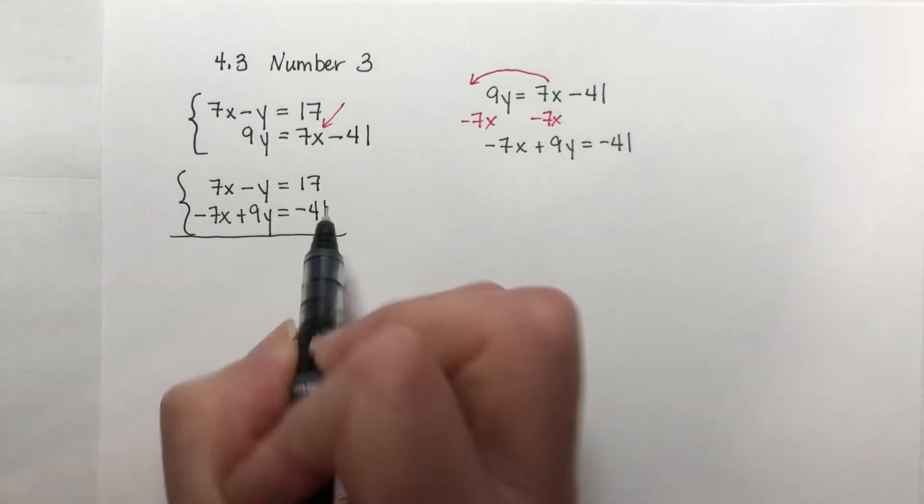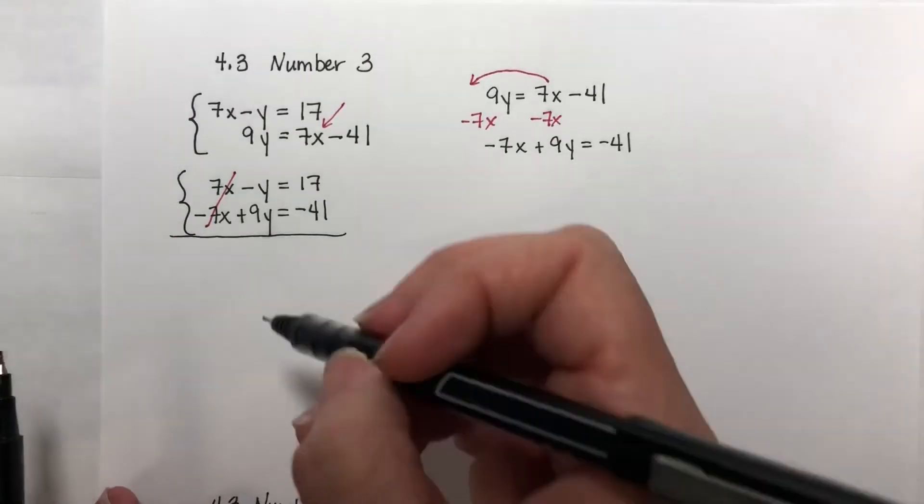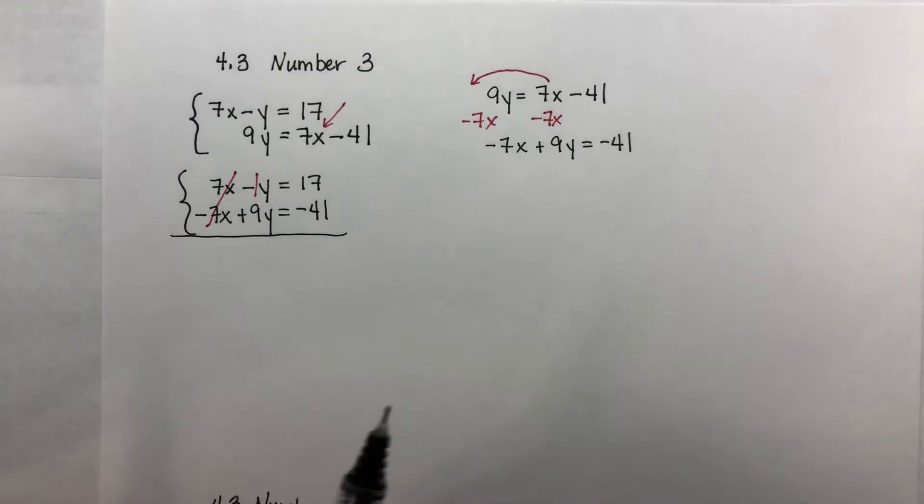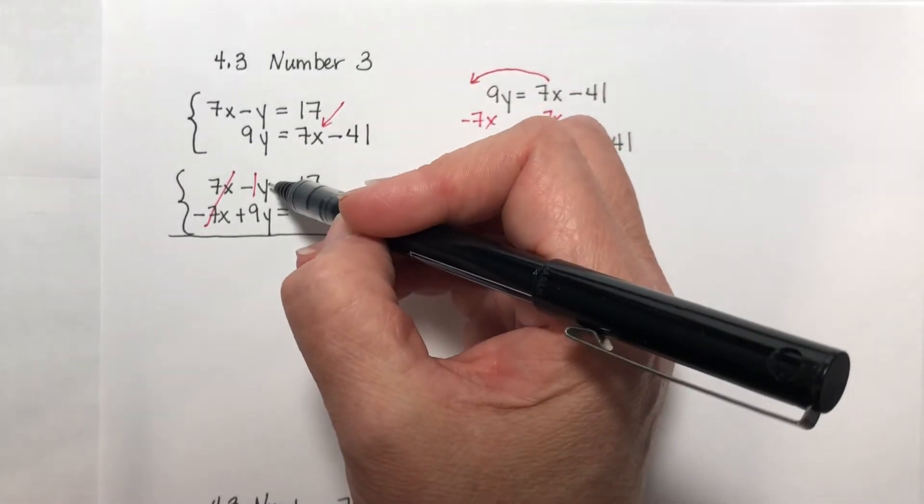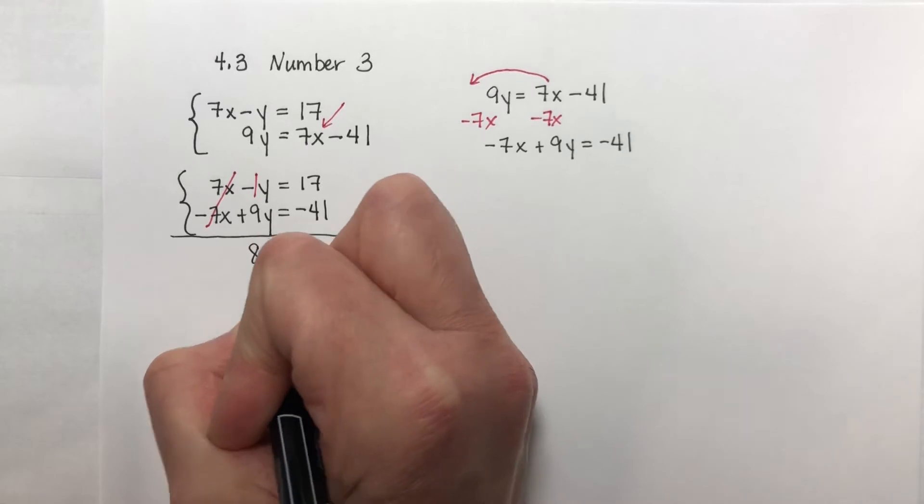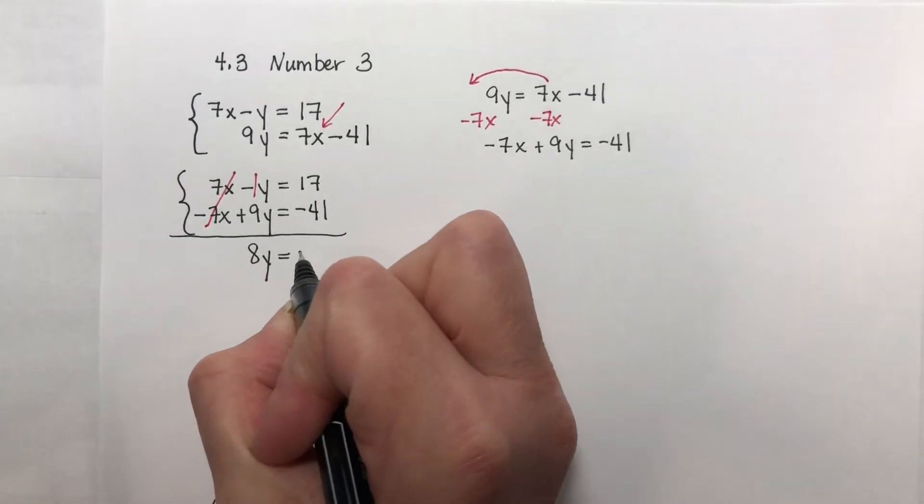So if I add these together, my x's cancel out, which is what I want. I want one of them to cancel out. Remember, that's a negative 1 right there. So I have negative y plus 9y would be 8y. And then you have 17 minus 41 on the other side, which would be negative 24.